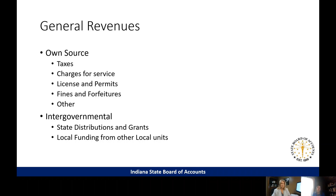Any distributions you get from the state that are coming from federal funding — a federal grant passed through the state — must be excluded. If it's a federal grant passed through another unit, like a drug task force funded with federal money, that must also be excluded. But anything from state funding or local funding being shared between governments would be included as a general revenue.